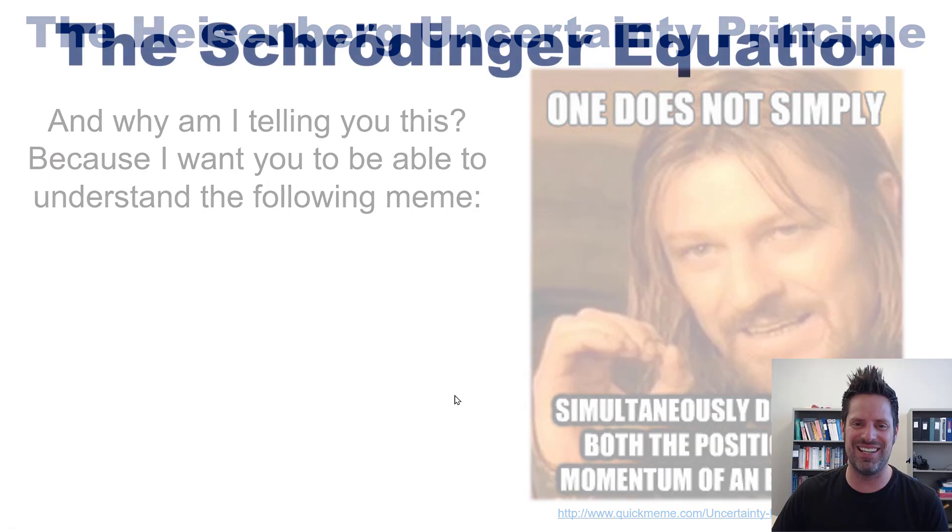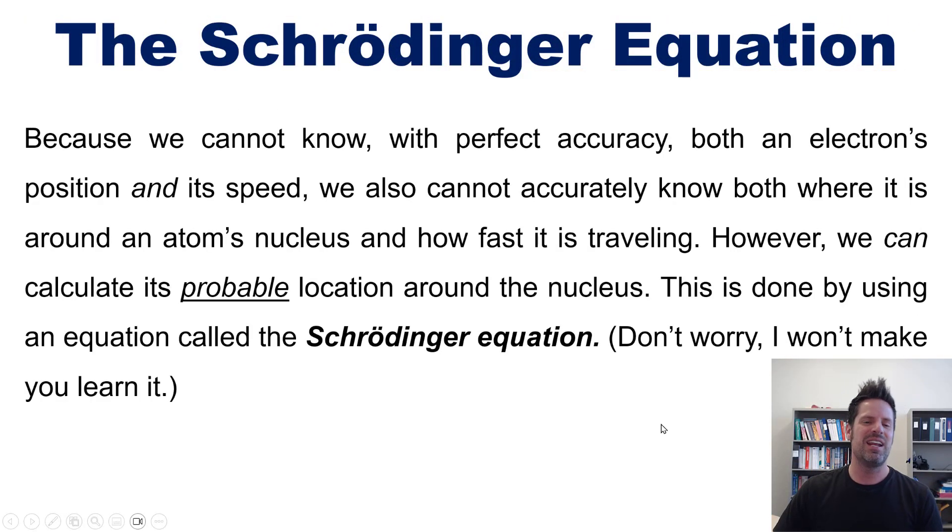All right, so now we'll move on to the Schrödinger equation. Now, because we cannot know with perfect accuracy both an electron's position and its speed or velocity, we also cannot accurately know both where it is around the atom's nucleus and how fast it's traveling. We can calculate its probable location around the nucleus. This is done using an equation called the Schrödinger equation. Now, don't worry for my students, I will not make you learn the equation itself.